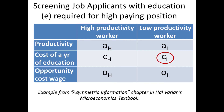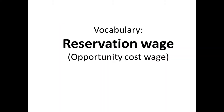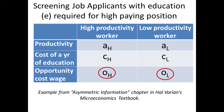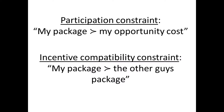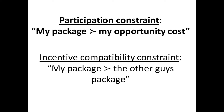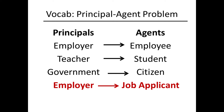An education here could be semesters of college, math classes, or some other kind of education. This scenario also has a reservation wage, which is just an opportunity cost wage — how much would the worker be paid at their next best option if they didn't take the job with our company. To solve this problem we need two kinds of constraints: a participation constraint and an incentive compatibility constraint. The participation constraint tells us under what conditions the person will be willing to take the job at our company as opposed to leaving for another job. It says: my package is better than my opportunity cost. These constraints are from the job applicant's perspective — the agent's perspective — because that's who we're trying to incentivize.